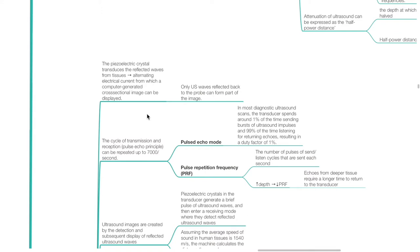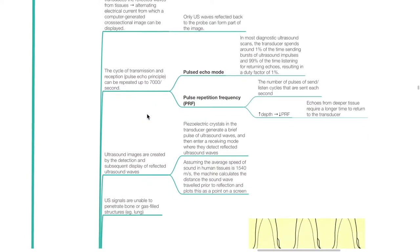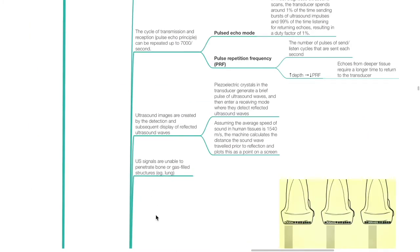When depth setting is increased, there is reduction in PRF, as echoes from deeper tissue require a longer time to return to the transducer. Ultrasound images are created by the detection and subsequent display of reflected ultrasound waves. Assuming the average speed of sound in human tissues is 1,540 meters per second, the machine calculates the distance the sound wave travels prior to reflection and plots this as a point on the screen. Ultrasound signals are unable to penetrate bone or gas-filled structures such as the lung.